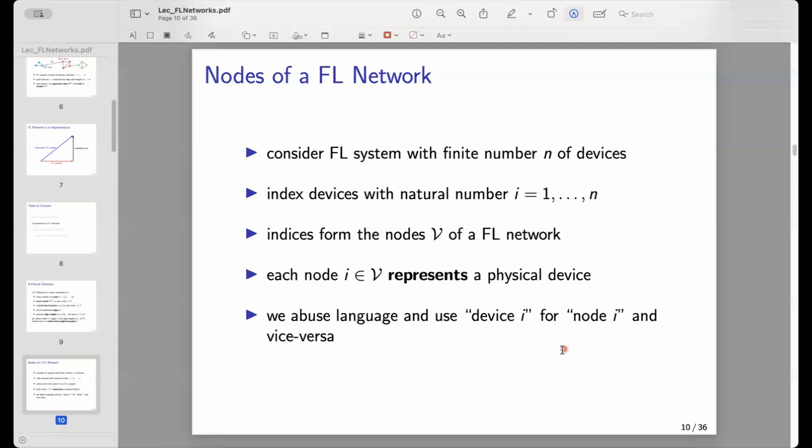Now, as I mentioned, the nodes of a federated learning network represent devices. So each node, let's say node 1, represents or stands for or denotes a real-world physical device. This could be a smartphone or could be a supercomputer or could be a smart light bulb.